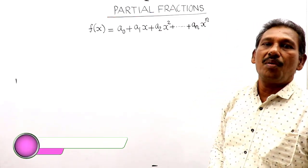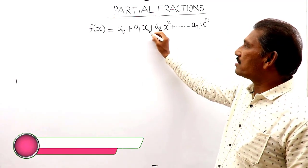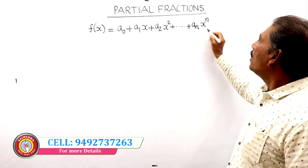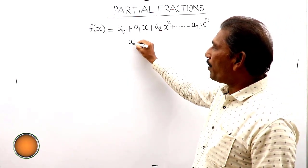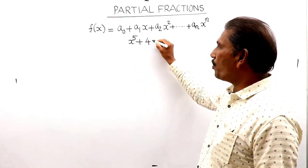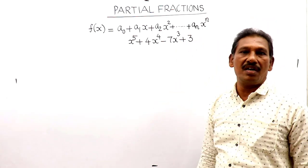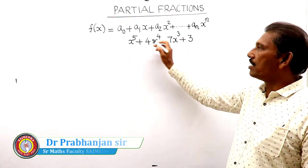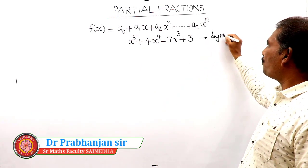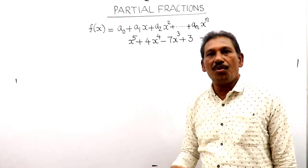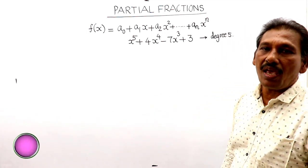A polynomial has some degree, where n is called the degree of the polynomial and x is the variable. The degree is very important, because with respect to that degree only we can define what is meant by a partial fraction.